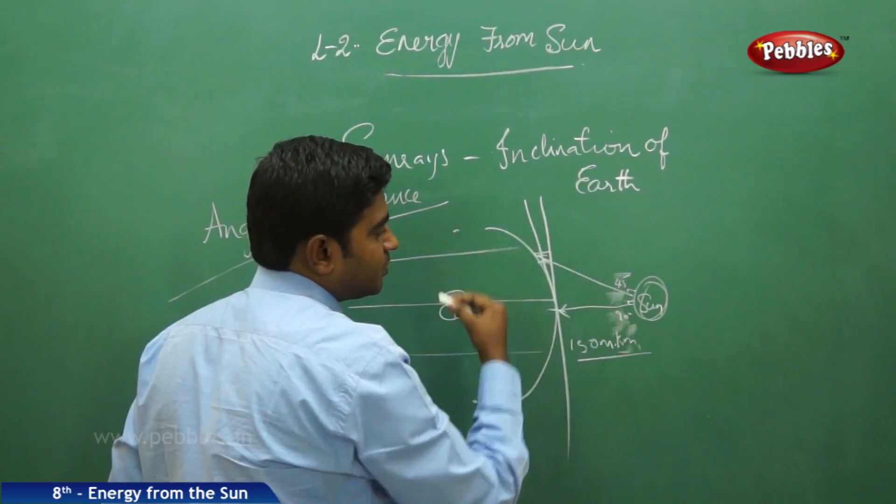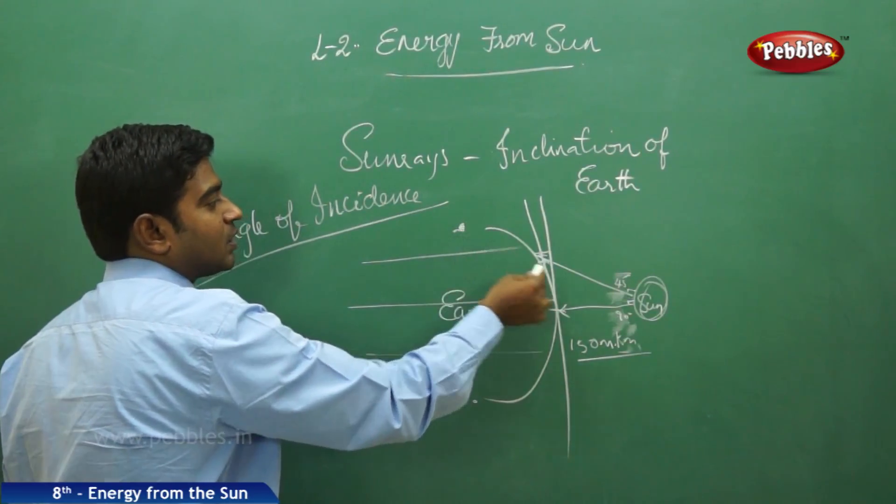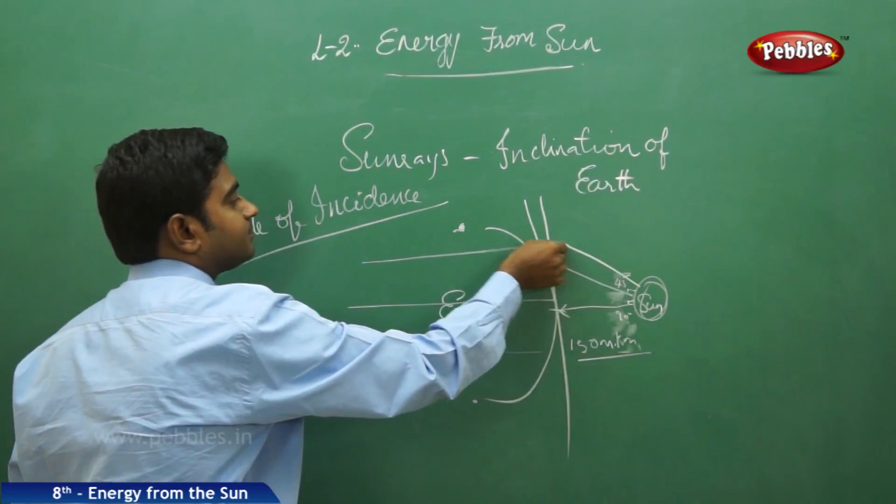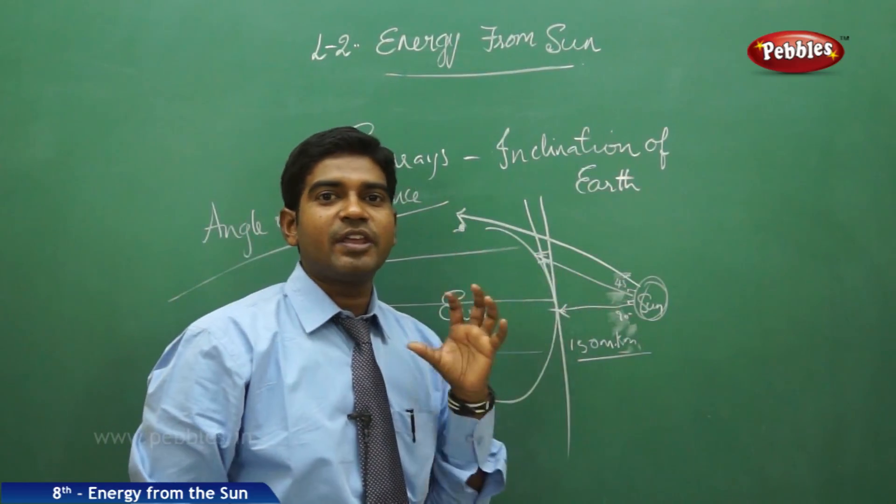If it is nearby the equator, the energy is directly connecting here. This extra distance has to be traveled by the waves, and if it goes to the poles, it has to travel such a long distance. This is the angle of incidence which brings the variation for us.